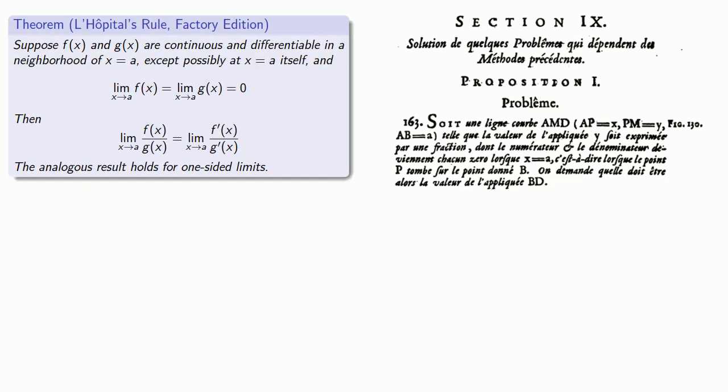So the problem that L'Hôpital came across that Bernoulli solved is this one. And if you can't read French, here's the English version. Suppose f(x) and g(x) are continuous and differentiable in the neighborhood of x equals a, except possibly at x equals a itself, and both limits are zero. Then the limit of the quotient is the limit of the derivatives.